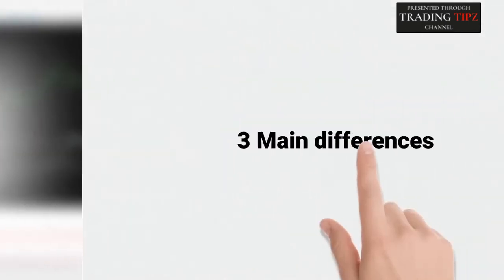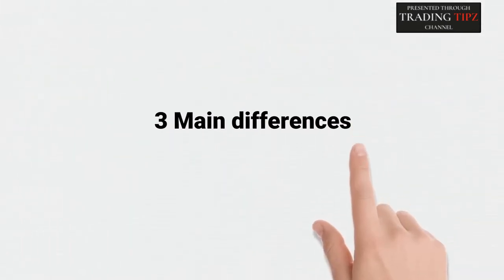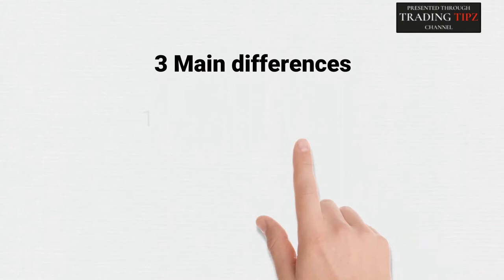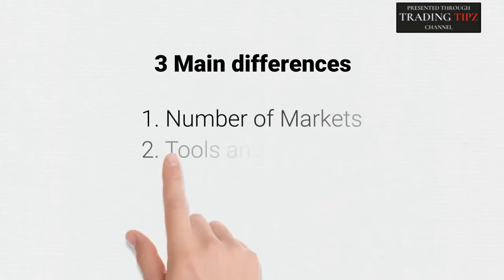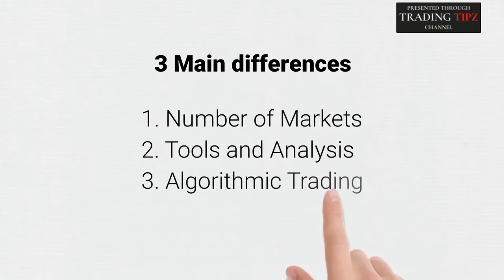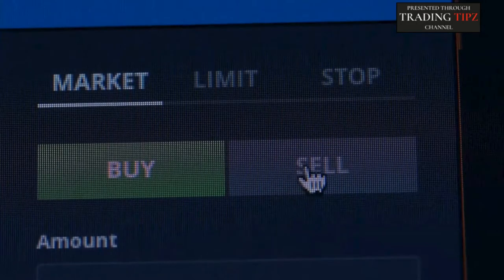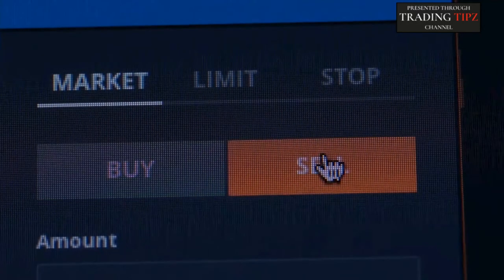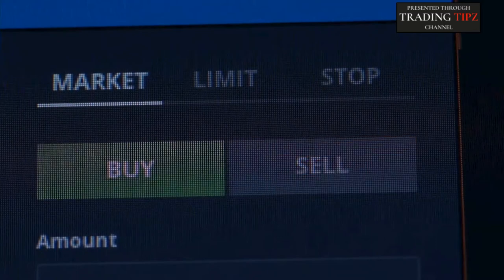There are three main differences between MetaTrader 4 and MetaTrader 5: number of markets, tools for market analysis, and algorithmic trading. Today, we are going to walk you through each core difference so you get a better understanding of which MetaTrader version is the right one for you.